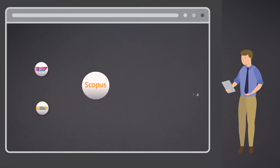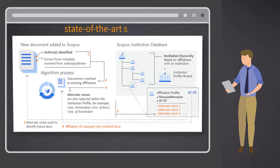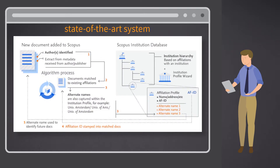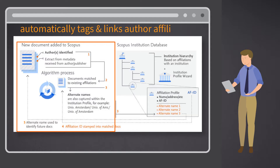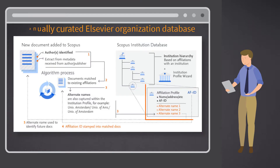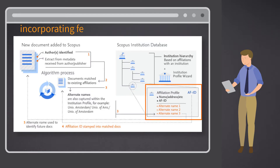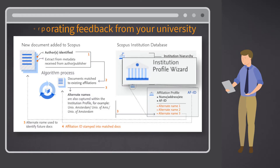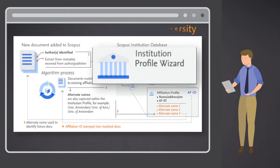This is also one reason ranking organizations choose Scopus — for the quality and structured data that it provides. Scopus achieves this through a combination of a state-of-the-art system that automatically tags and links author affiliations, a high-quality manually curated organization database, and by incorporating feedback from universities themselves through the Institution Profile Wizard, or IPW.